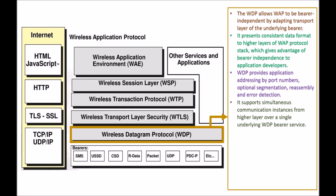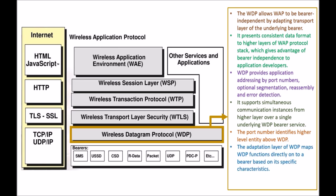WDP supports simultaneous communication instances from higher layers over a single underlying bearer service. The port number identifies the higher level entity above WDP. The adaptation layer of WDP maps WDP functions directly onto a bearer based on its specific characteristics. On the GSM SMS, datagram functionality is provided by WDP.